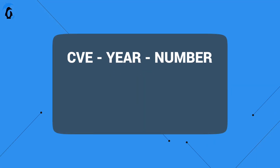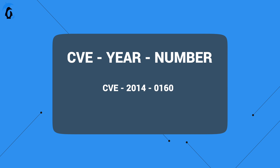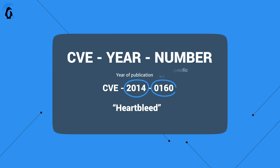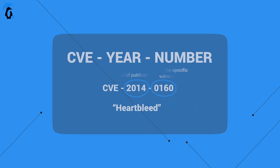But how do CVEs actually work? A CVE identifier is a text string in the format CVE-Year-Number. For example, CVE-2014-0160, which refers to the vulnerability called Heartbleed. This tells you the year that it was requested — 2014 in this case — and the ID of the specific vulnerability, 0160. The number part gets reset every year.